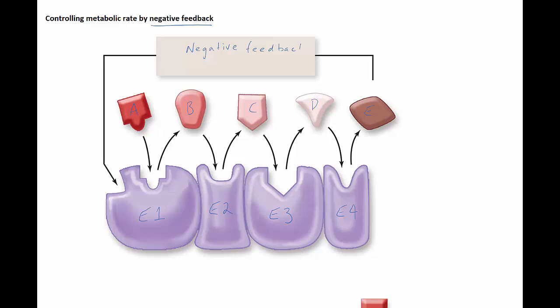Now, in fact, what can happen is something called negative feedback. And what actually happens there is that product E prevents the whole metabolic pathway from occurring by actively connecting with enzyme E1. And when it does that, it actually changes the shape of the active site and prevents the whole process from occurring. So negative feedback is where the product of a reaction inhibits the enzyme that controls its formation.